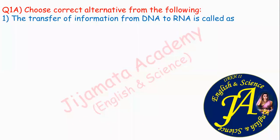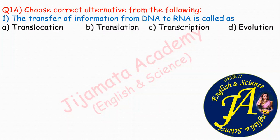The first question: the transfer of information from DNA to RNA is called as — options are translocation, translation, transcription, evolution. The correct answer is option C: transcription.